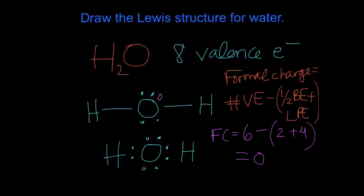We can do the same thing for hydrogen. Hydrogen has one valence electron, no lone pair electrons, but two bonding electrons. So we do one minus one (half of the bonding electrons), which equals zero. Each hydrogen has a formal charge of zero. This is a happy Lewis dot structure because all formal charges are zero and all octets are completely full.